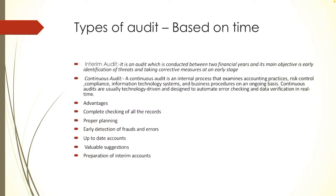Interim audit is when an audit is conducted between two annual audits — that is, if the audit is conducted half yearly or at every nine months. When audit is conducted two times a year or at every nine months, such audit is known as interim audit.